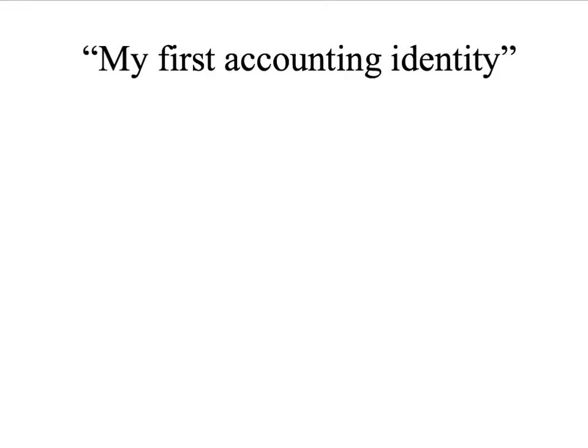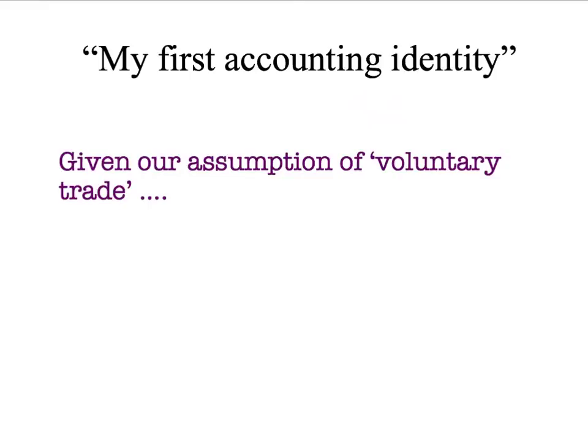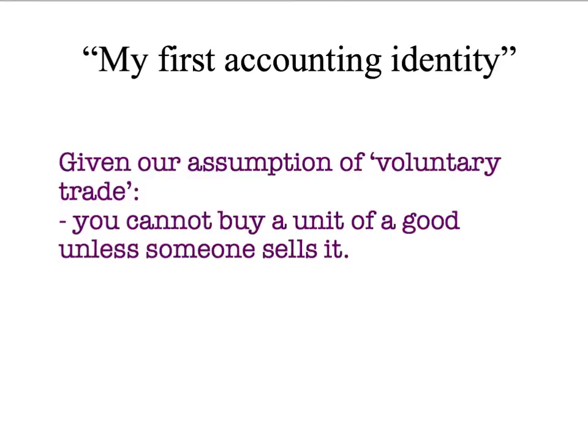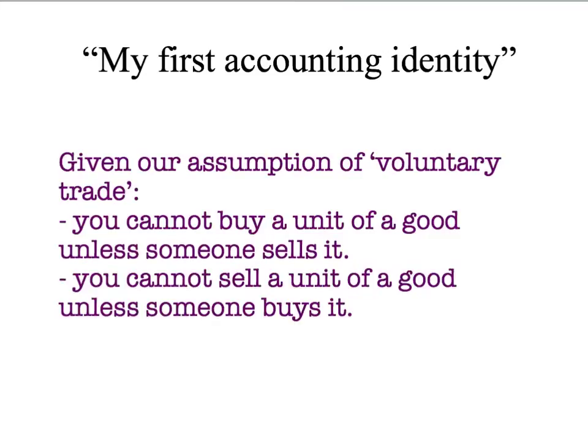Before we can do that, however, we need to introduce the concept of an accounting identity. An accounting identity is something that always holds true. In other words, it doesn't just hold in equilibrium, but it always applies in a market with voluntary trade. Our first accounting identity is going to almost sound trivial, but it has really important consequences. Given our assumption of voluntary trade, we can note that you cannot buy a unit of a good unless someone sells it, and you cannot sell a unit of a good unless someone buys it.